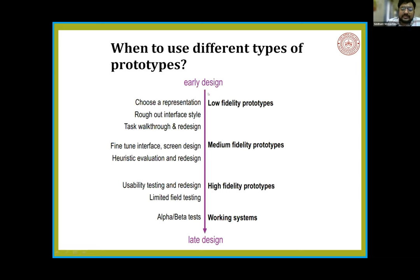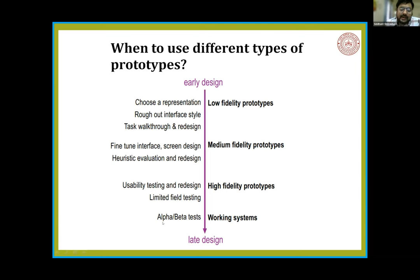In early design you use representation throughout interface style, task walkthrough, and redesign — that's the first step. Second is medium fidelity: used for interface, heuristic evaluation, and redesign. High fidelity is used for usability testing, redesign, and limited field testing. After that there will be alpha and beta testing, and after that finalization of the product. This is basically a lineup for any design, starting from low to the final design.